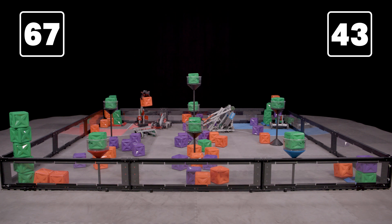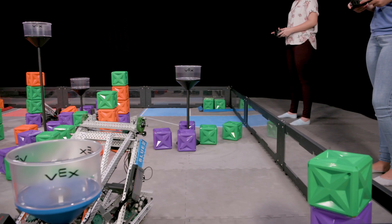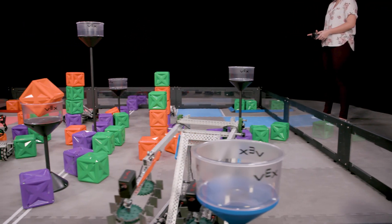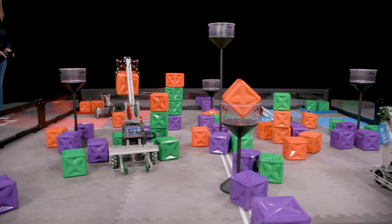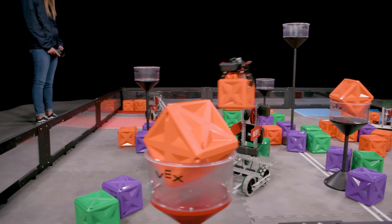However, if a match ended with a green cube in all seven towers, then those same scored green cubes would now be worth eight points each. This adds a brand new element of strategy to the game, as every robot action affects not only their alliance's score, but also potentially that of their opponents.